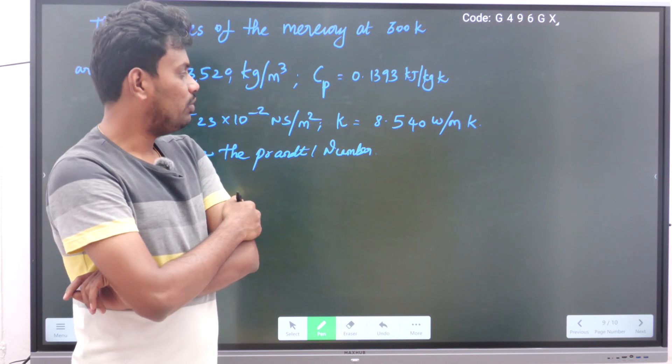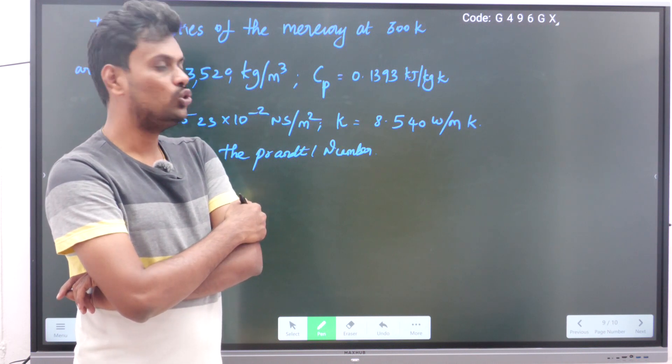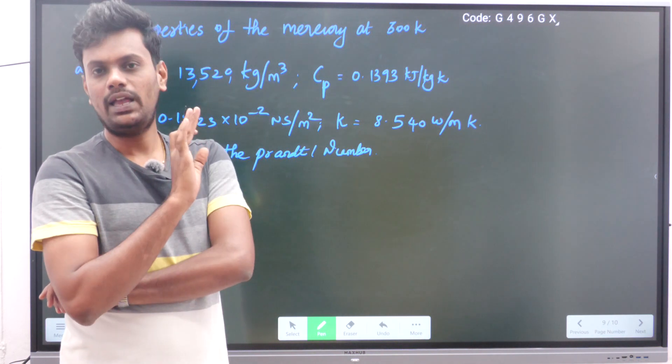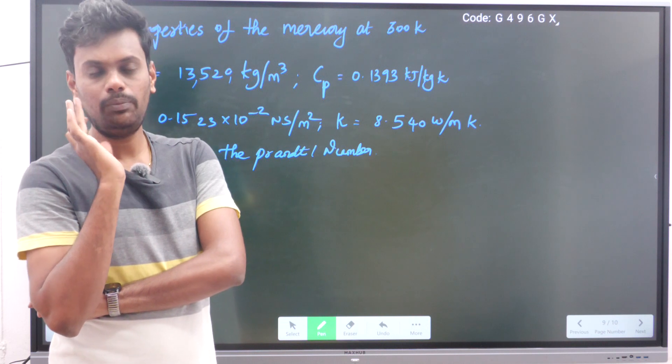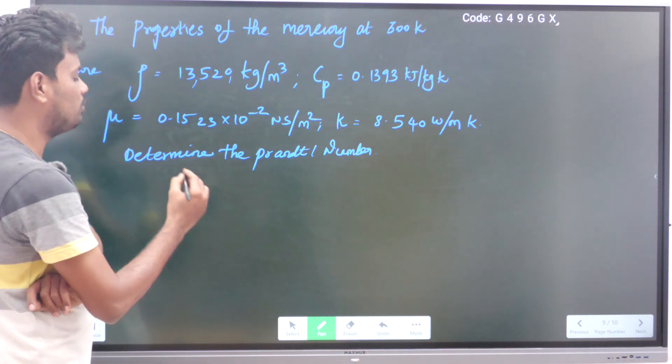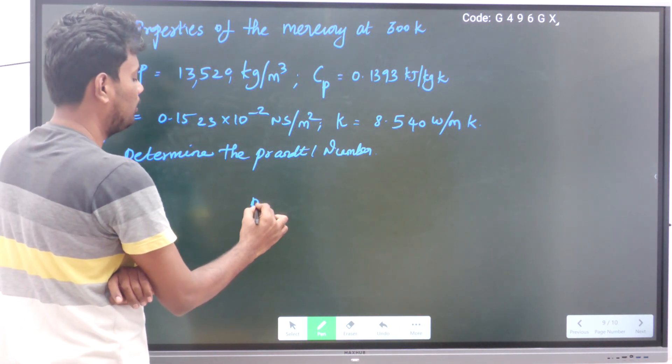K (thermal conductivity of mercury) is given as 8.540 W/m·K. They are simply asking us to find out the Prandtl number. This is a direct formula problem. So Prandtl number means we should know the formula for Prandtl number.